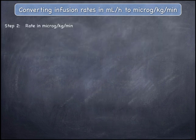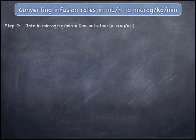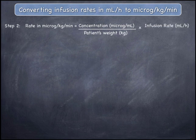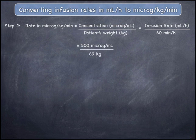In the second and final step, the rate of infusion in micrograms per kilogram per minute can be found by dividing the concentration of the additive in the IV fluid in micrograms per mL by the patient's weight in kilograms, and then multiplying by the infusion rate in mLs per hour and dividing by 60 minutes per hour. This gives 500 micrograms per mL divided by 69 kilograms, multiplied by 20 mLs per hour, divided by 60 minutes per hour.